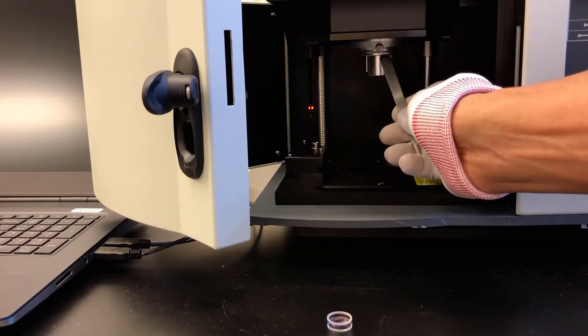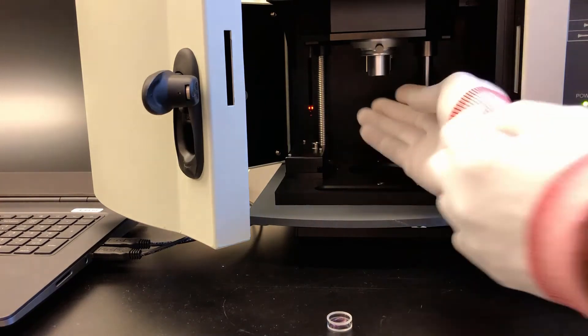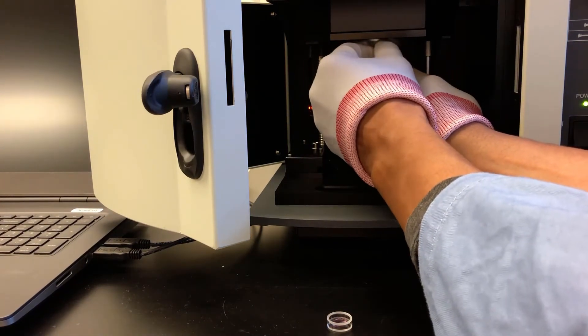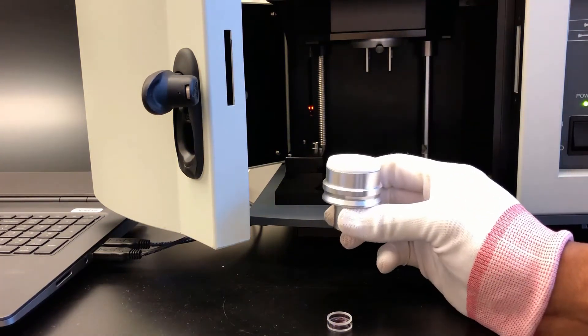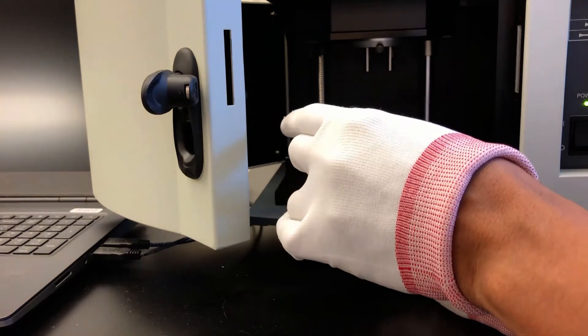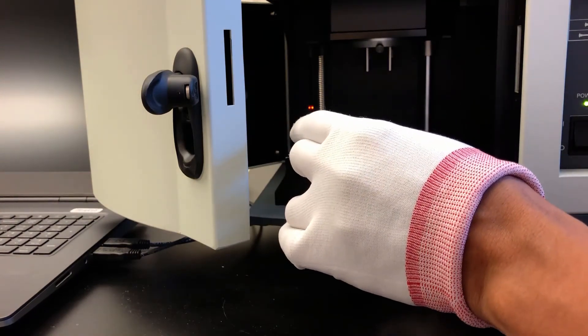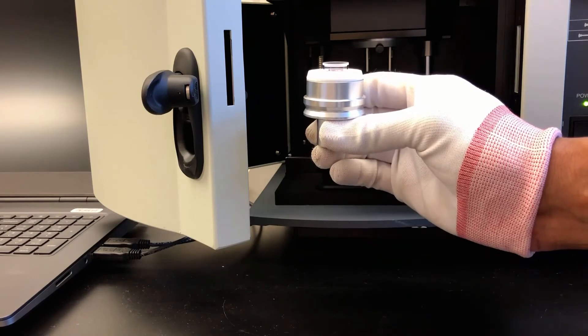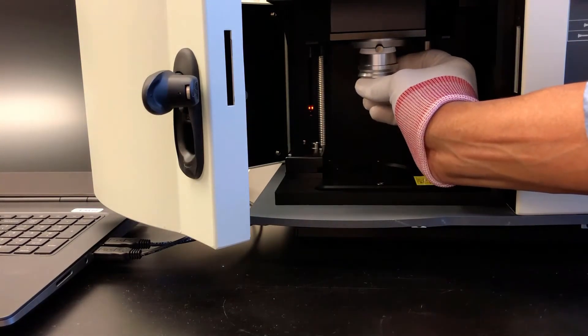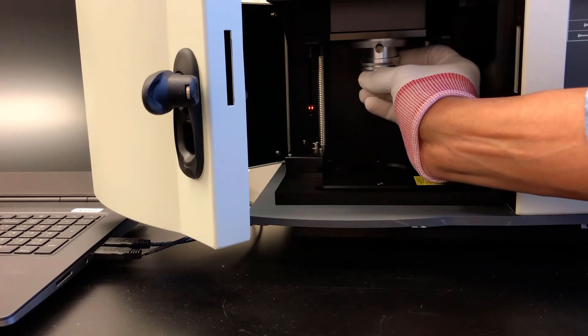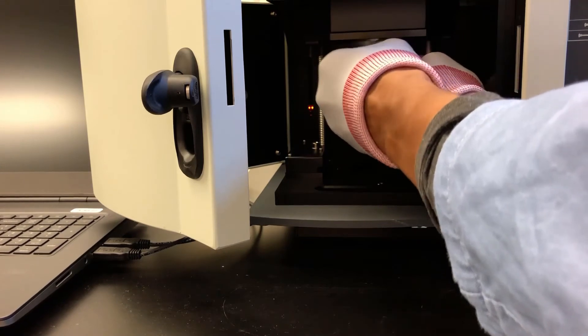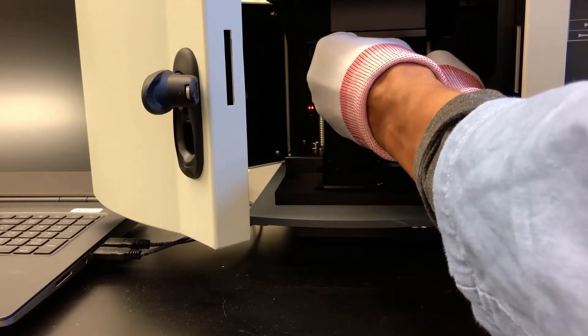You'll notice a screw holding a reflective plate in the integrating sphere. Let's remove that to put our sample in place. Be sure to tighten the screw again so the plate is secure.